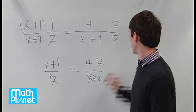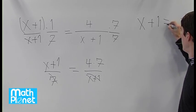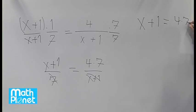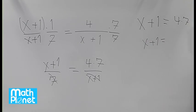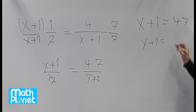Now we just have x+1 equals 4 times 7. x+1 equals 4 times 7, which is 28.